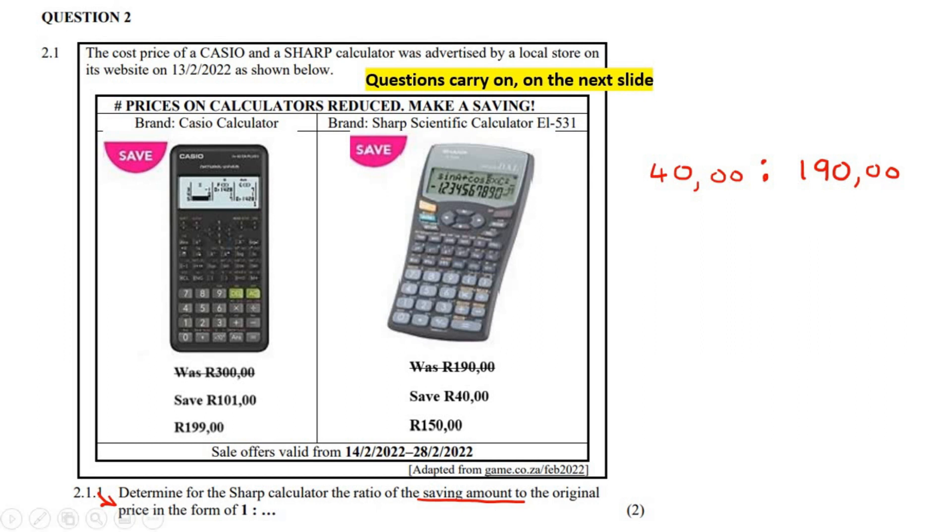But now they want us to simplify it in the ratio so that it becomes a one. So how can I turn this number into a one? Well, I could divide it by 40. But mathematics tells us that if you divide on the one side, you must also divide on the other side. So if you say 40 divided by 40, you end up with a one on the left, and if you say 190 divided by 40, then you end up with 4.75.